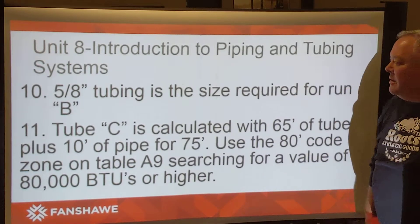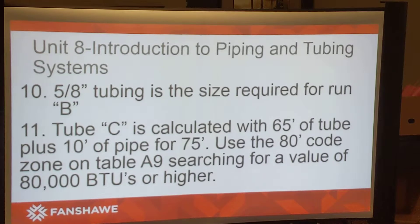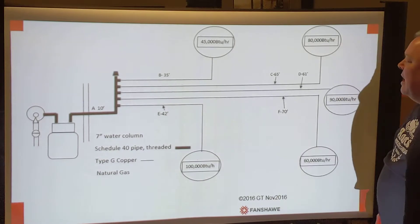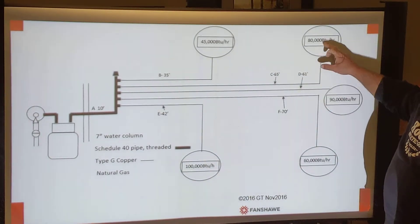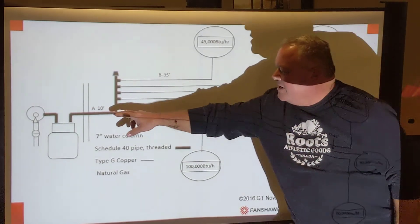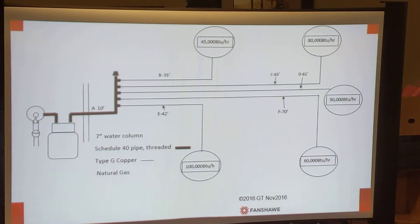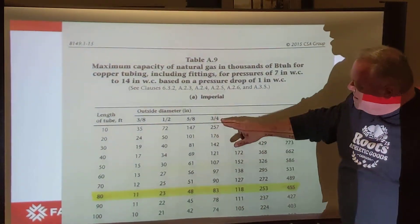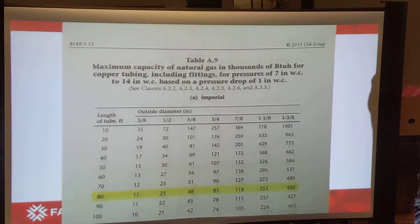Tube C is calculated with 65 feet of tube plus 10 feet of pipe, so our total length is 75 feet. We go to the 80-foot code zone on Table A9, searching for a value of 80,000 BTUs or higher. At the 80-foot level, three-quarter inch just handles it at 83,000 BTUs, so three-quarter inch is the size for tube C.